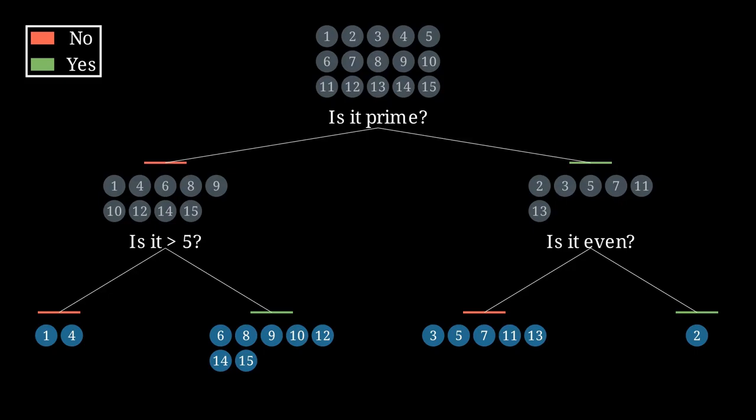What we have here is a map of exactly the information we have at every point in the game so far. For example, if the responder tells us that our number is not prime, but is greater than 5, we know that these are the numbers that could still potentially be the secret number.